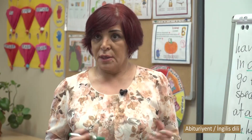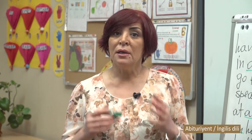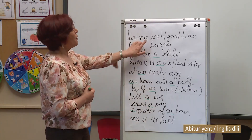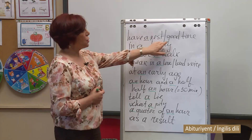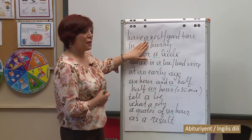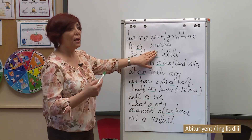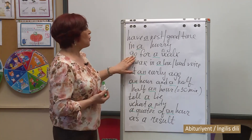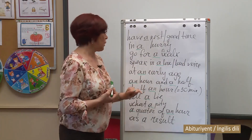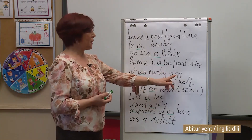There is a list of phrases that are always used with indefinite articles. You have to remember these expressions and phrases. They include: 'have a rest' or 'have a good time' — though 'time' is an uncountable noun, in this expression it is used with the indefinite article. Also: 'to spend a good time,' 'in a hurry' — for example, 'I am in a hurry' — 'go for a walk,' 'speak in a low or loud voice,' and 'at an early age.' If 'age' is in plural, no article is used: 'at early ages.'